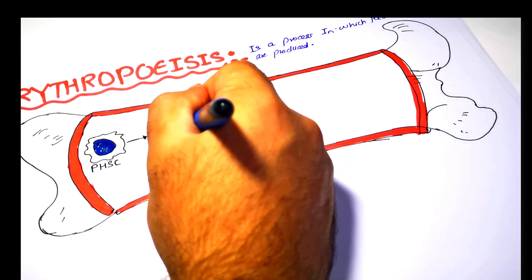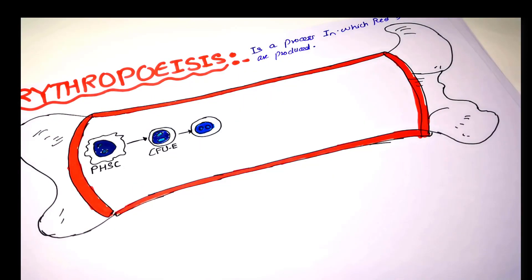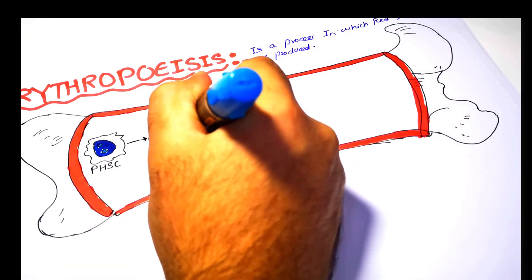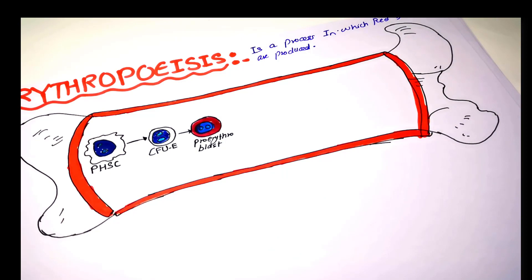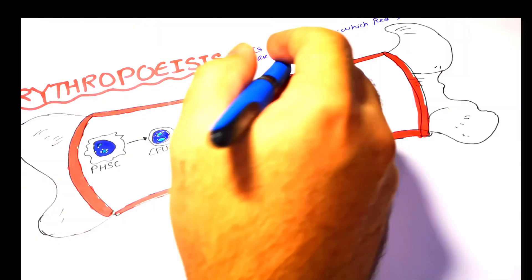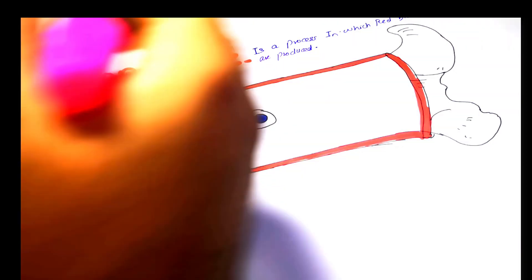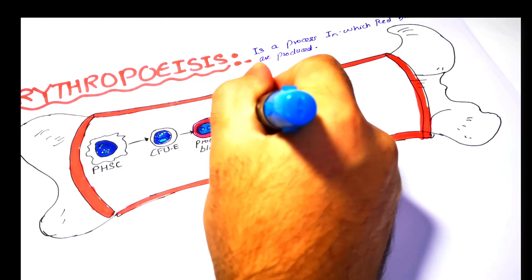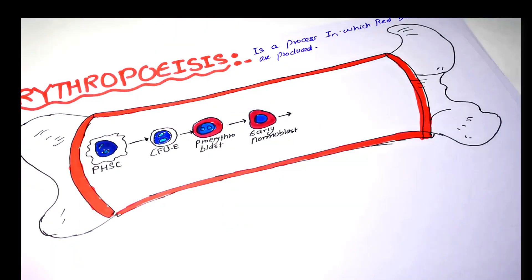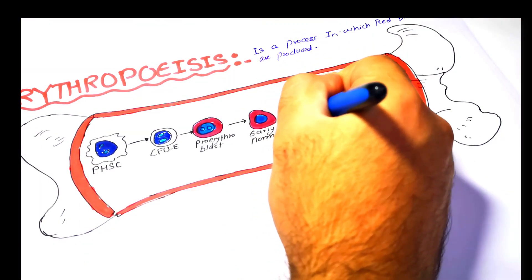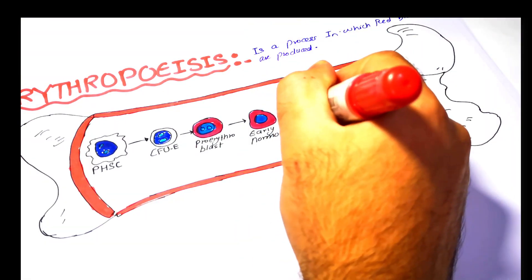The colony-forming unit erythrocyte will be further differentiated into the pro-erythroblast. The pro-erythroblast is a large cell which also has a large nucleus with two nucleoli. The pro-erythroblast will be differentiated further into the early normoblast. The early normoblast will be differentiated into the next stage, the intermediate normoblast, which will then be differentiated further into the late normoblast.